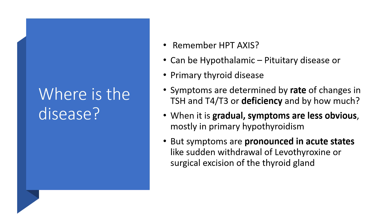But the symptoms are more pronounced when it is acute — when it's happening suddenly. Then the symptoms will be more pronounced, like sudden withdrawal of levothyroxine. If someone is on treatment with T4 and there is sudden stoppage of levothyroxine, that is an acute state and symptoms will be more pronounced.